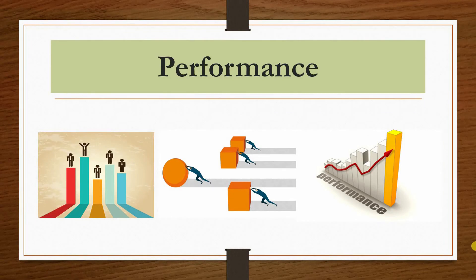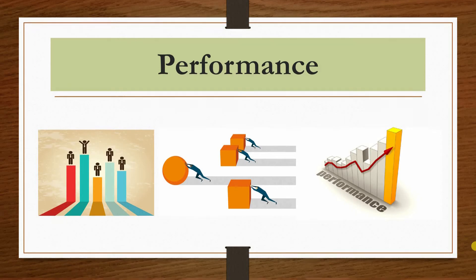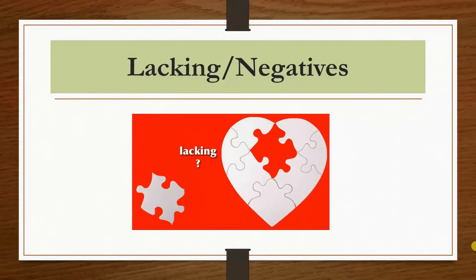The most important thing is performance. If you are reviewing an electronic product like a smartphone, you need to compare it with others — compare the performance, the price-to-performance ratio, the clock speed, power consumption, and how good it is compared to other devices. Tell all those things.